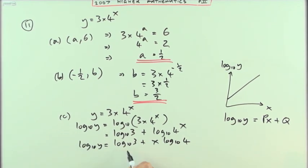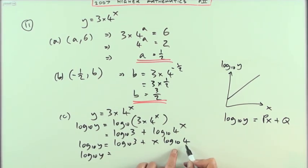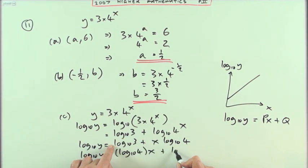Now it's just a case of rearranging that into a well-known phrase, i.e. this one. So I've got log₁₀ of y equals—I want x to come second with something multiplying it—so that log₁₀ 4 is going to multiply it, and this log₁₀ 3 will just be on its own at the end. And there it is, that's in the form of a straight line.